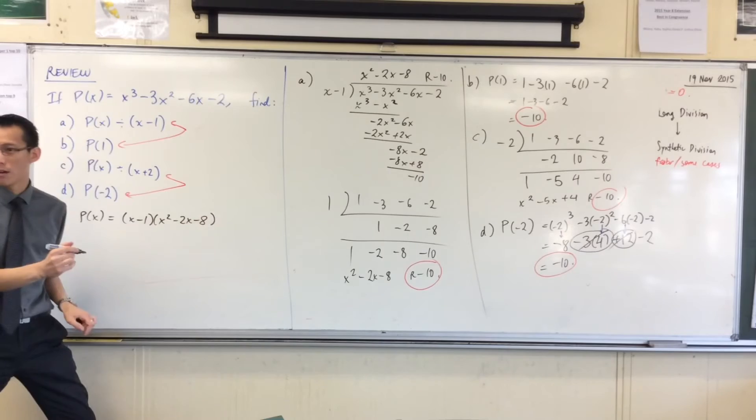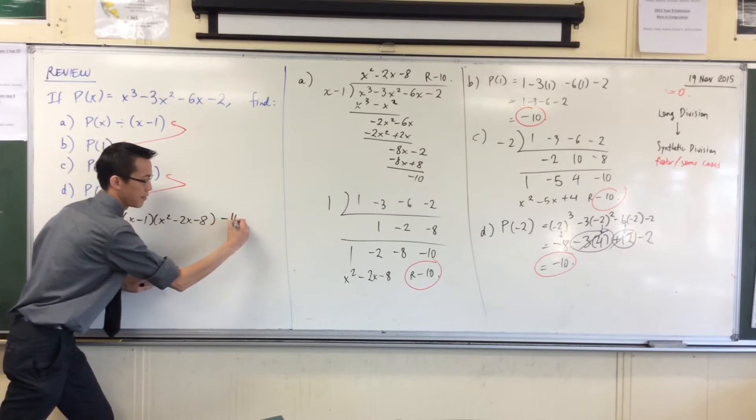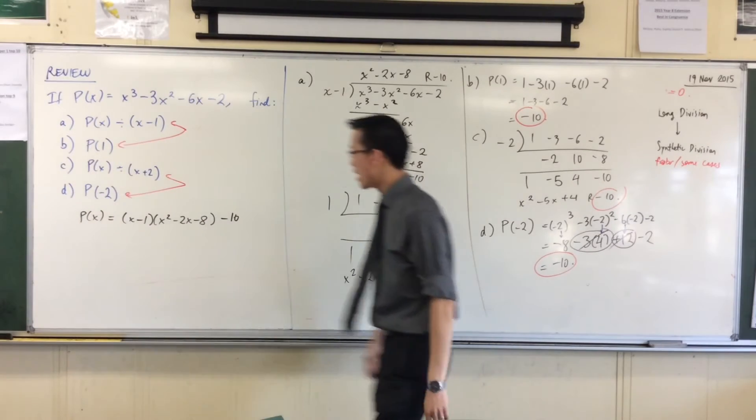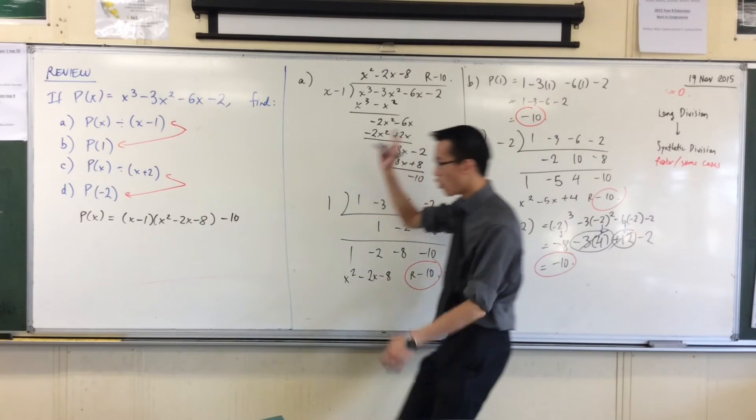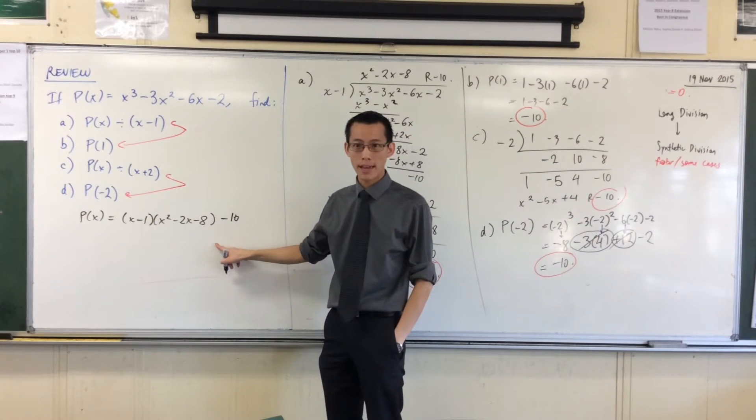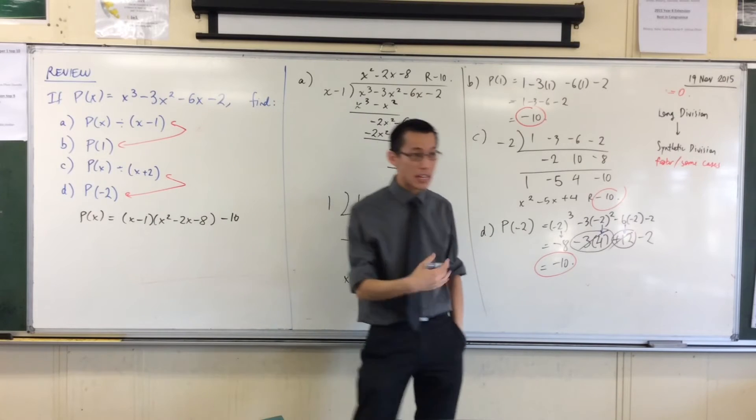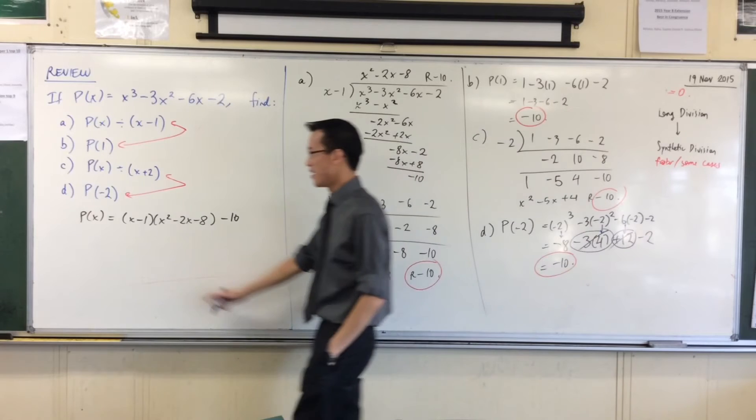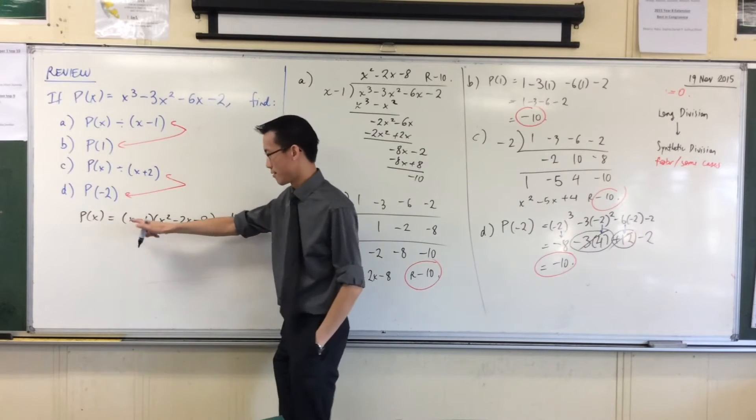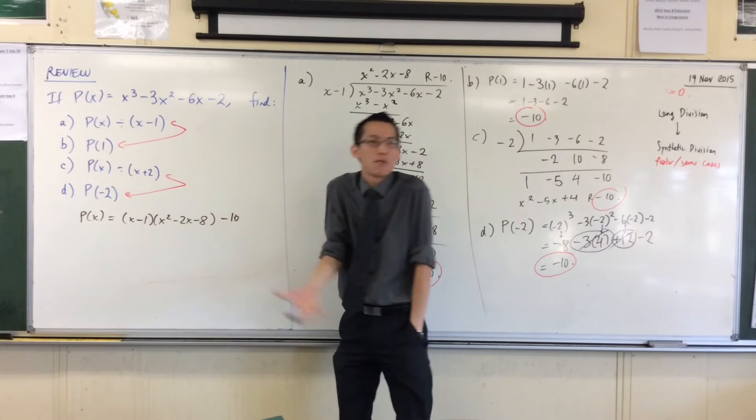Which in this case is minus 10. Now part A, that division told me that this is true. That's what I get out of this, in the same way that if you do numerical division, you can say some number is the divisor times the quotient plus whatever remainder is hanging on.